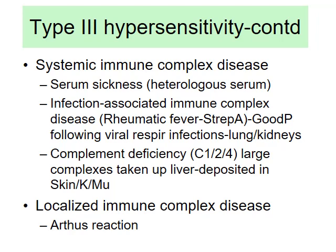Systemic immune complexes are bad because if they are circulating everywhere they cause widespread problems. An example is serum sickness, which occurs when people receive heterologous serum. This type of hypersensitivity can also come from infection — infection-associated immune complex disease. Good examples include rheumatic fever from Strep A, Goodpasture syndrome following viral respiratory infection. If you have a Strep A infection and make an antibody, that antibody can pick up your heart valves if they present the same epitope.